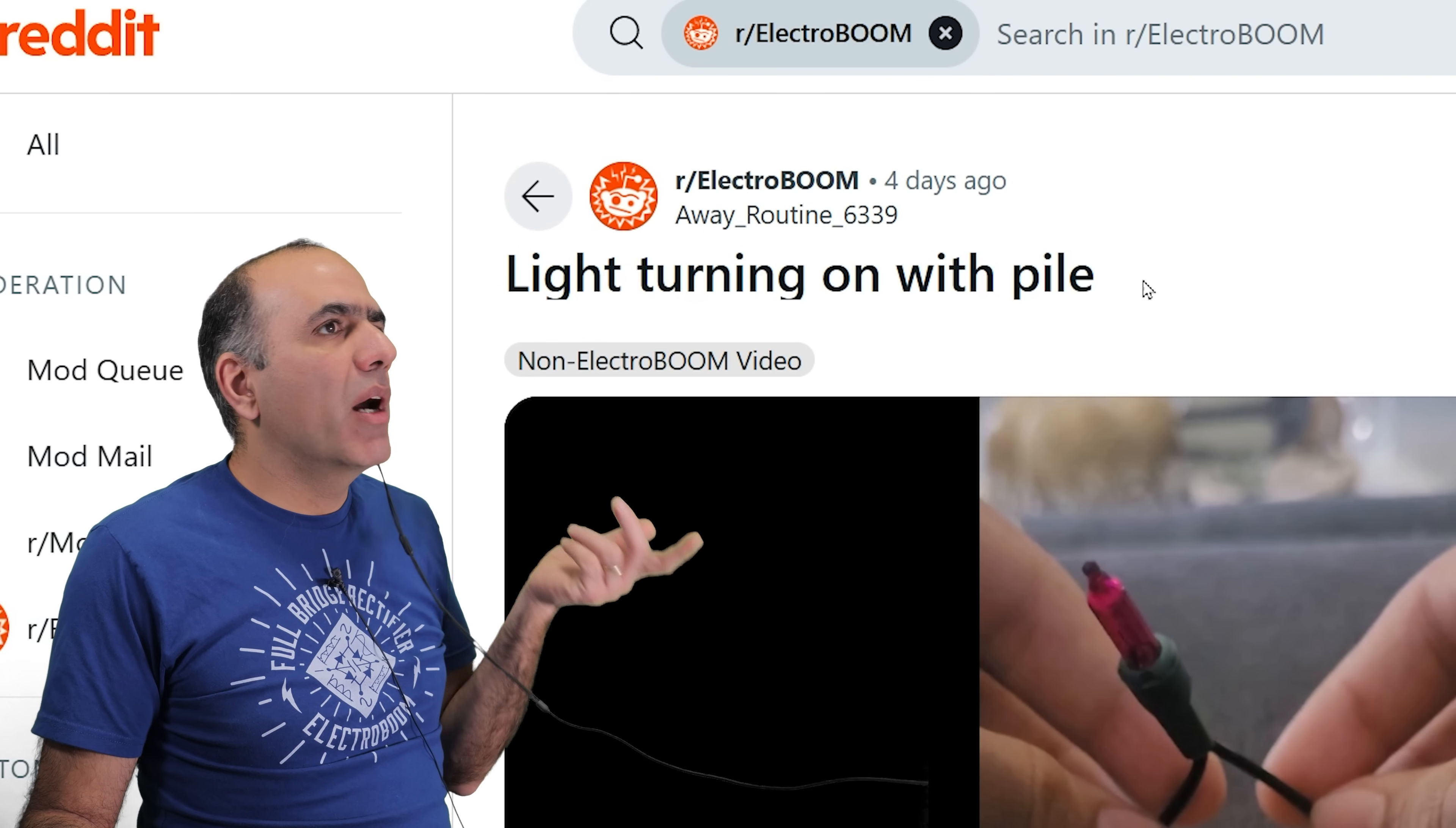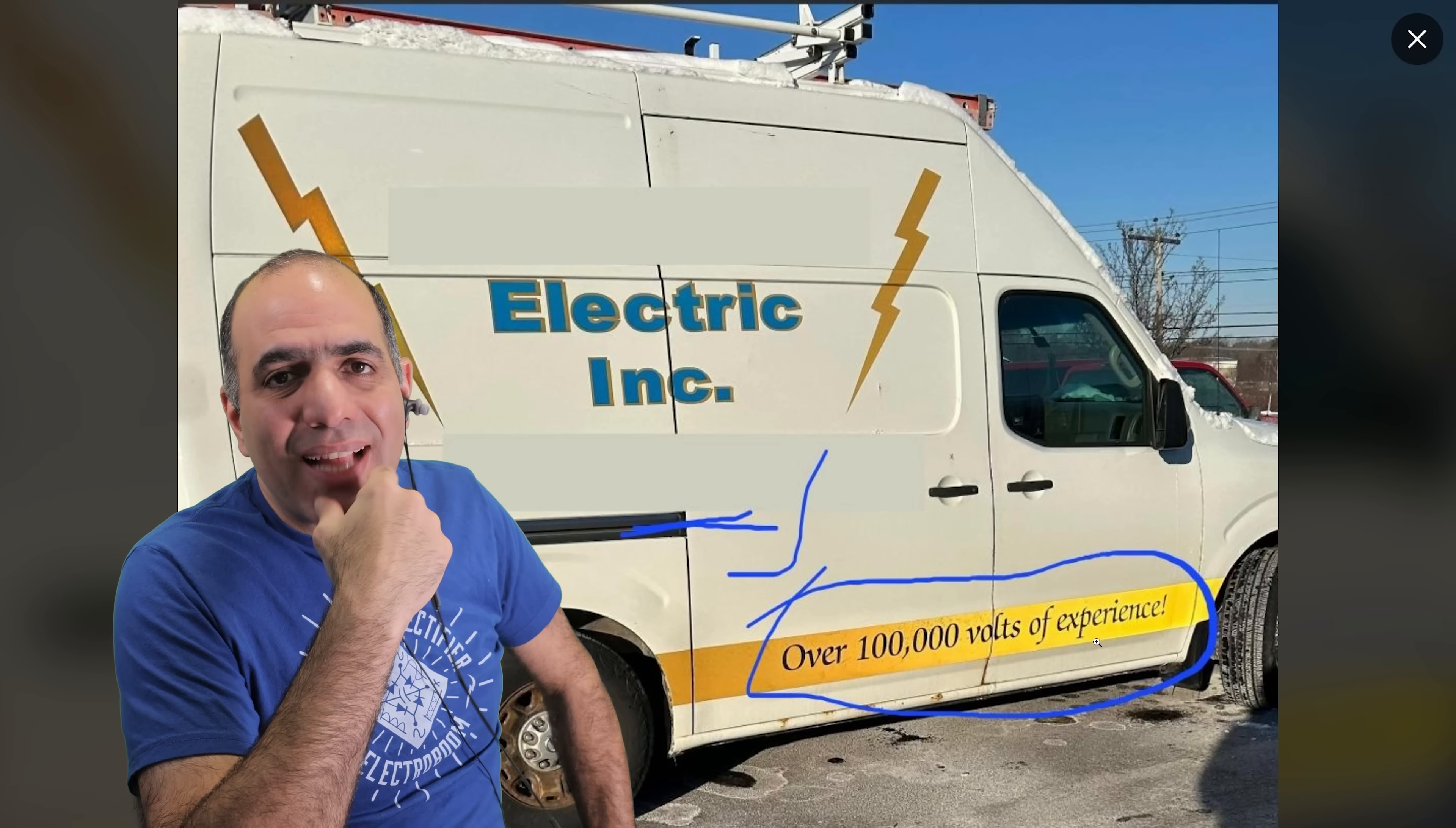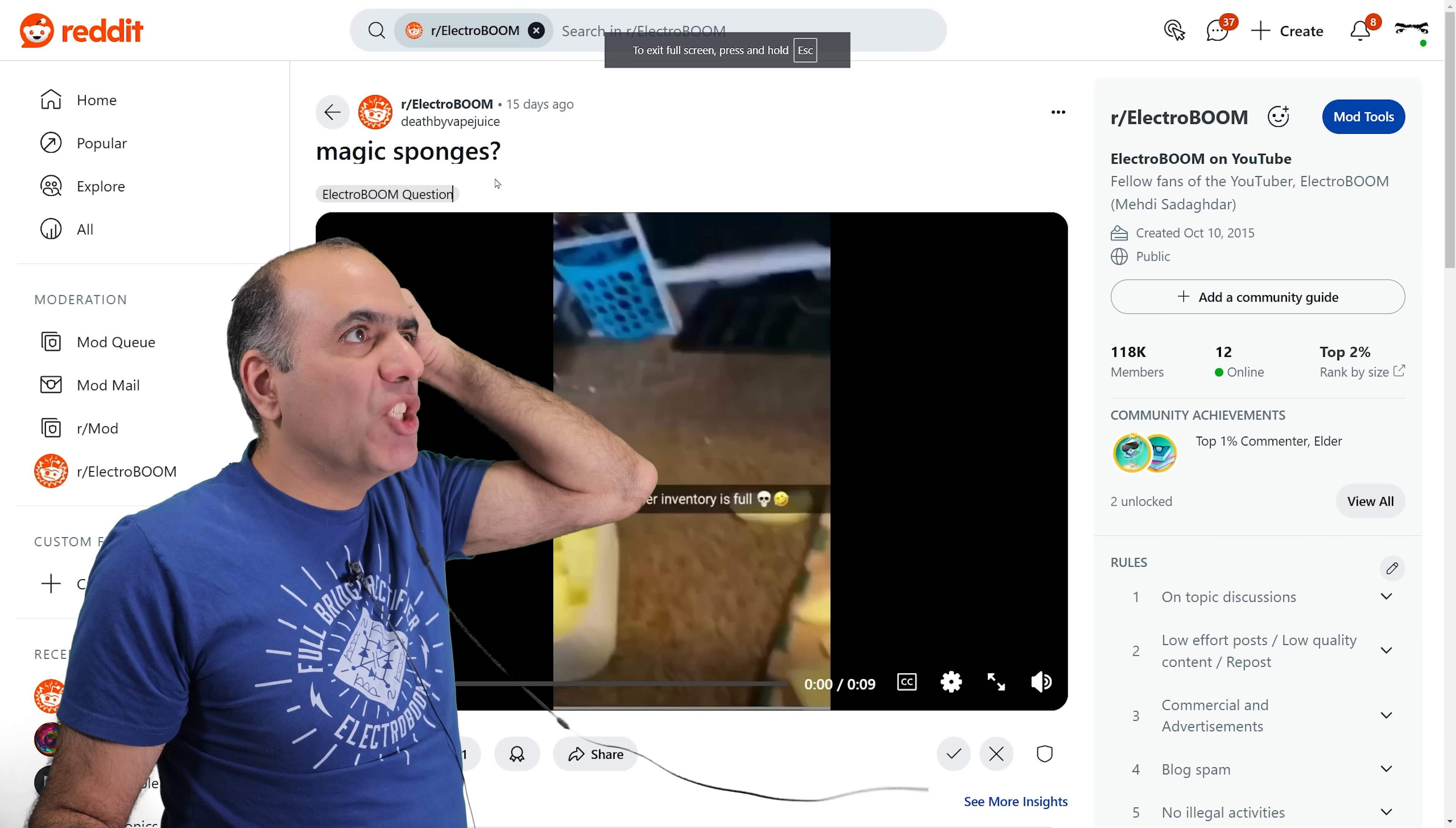Wow you and I both brother. I guess you are the weirdos that go out at sunrise or sunset and take picture of transformers. Light turning on with pile. With a pile of what? Oh with a battery? Who calls a battery a pile? Are you 100 years old? Oh zero up volts. Why am I looking at this? I'm just speechless. Electric ink over 100,000 volts of experience. Well I mean that's how we measure our level of experience in electrical business. If you can survive that much voltage you are clearly an expert. 90 microfarad 200 volt capacitor bank. Yum. Magic sponges?